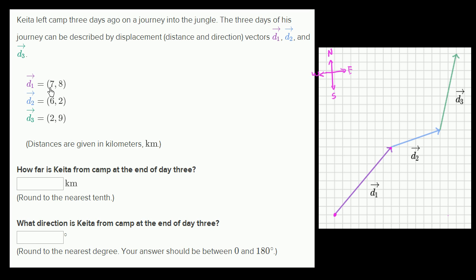So this is saying he went seven in the east direction — seven kilometers to the east. And he went eight in the north direction. So this component is seven and this component is eight.